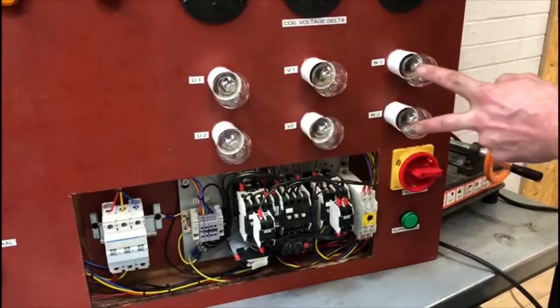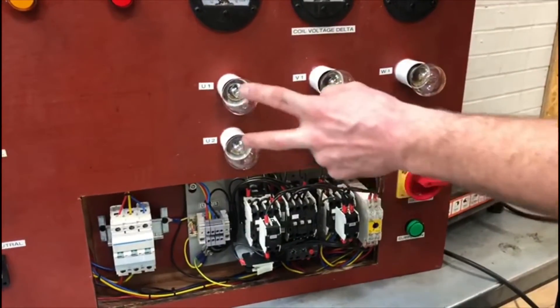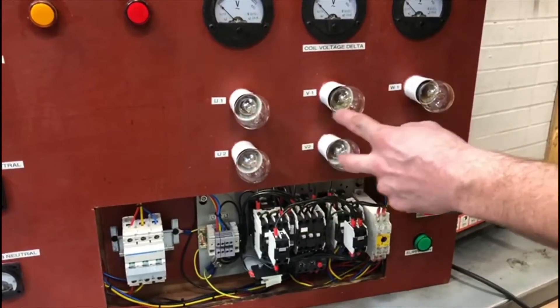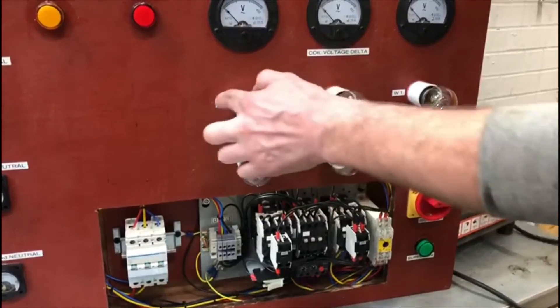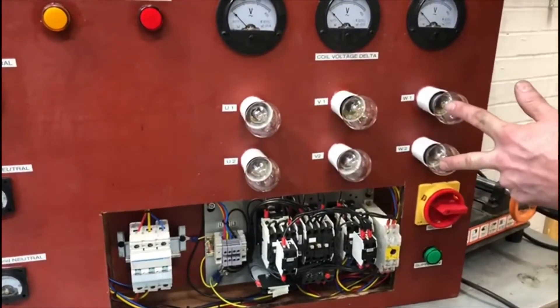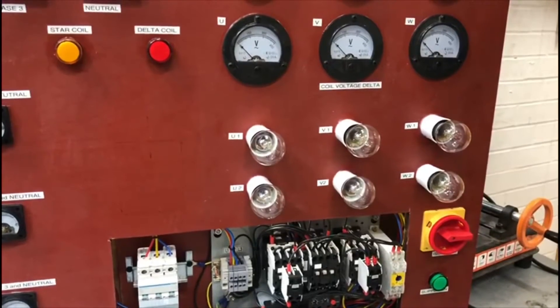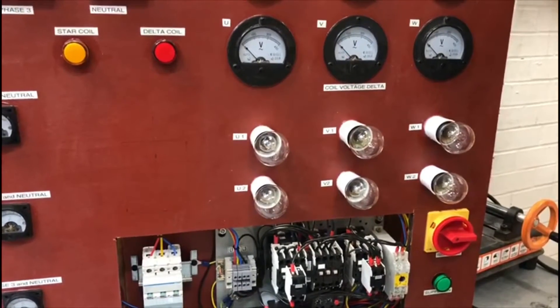If you look at the bottom, you will see three sets of lamps. These three sets of lamps represent the coils of a three-phase motor, so we have coil U, V, and W. All they are is two lamps wired up in series with each other.